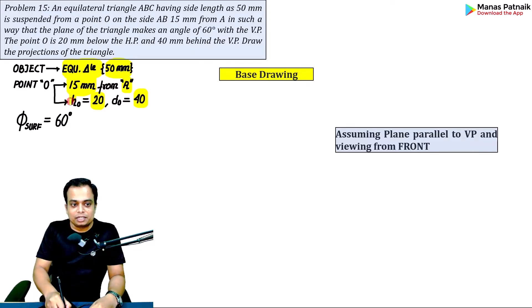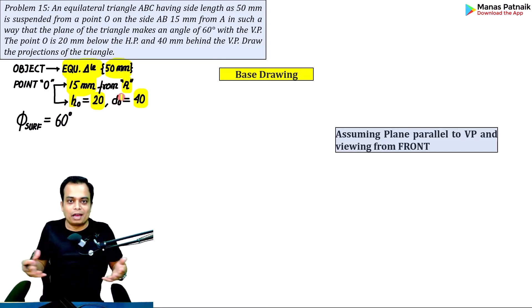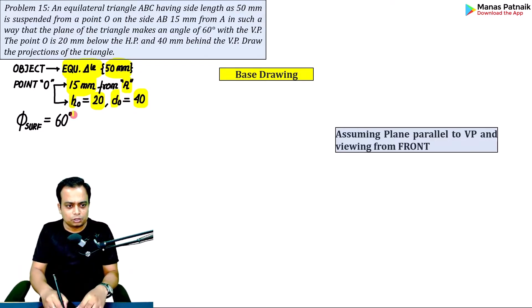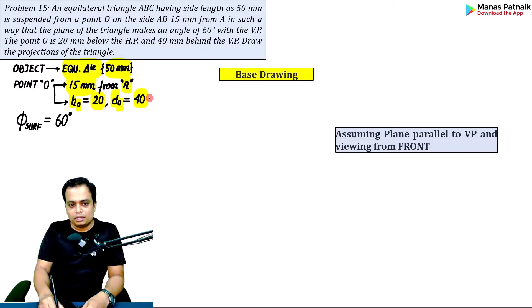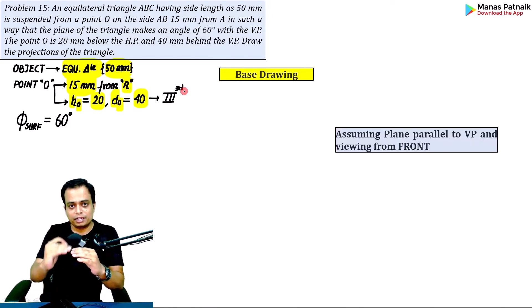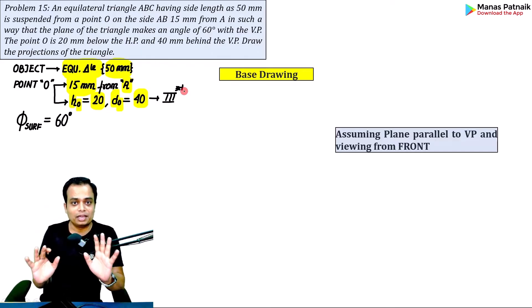Any distance with respect to HP is represented by small 'h', and any distance with respect to VP is represented by small 'd'. So h_O = 20 mm and d_O = 40 mm. In third quadrant projection, 'd' is above and 'h' is below the XY line — meaning the top view is above and the front view is below.